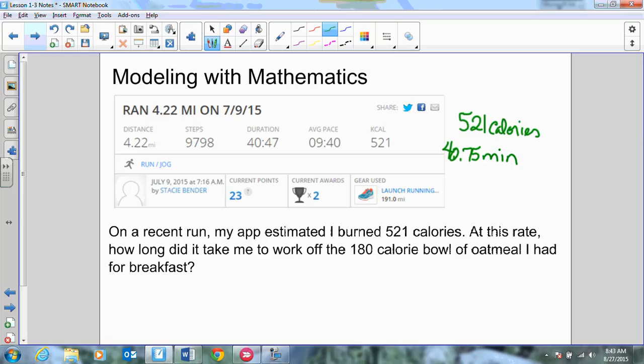Okay. So, I'm going to do that on your calculator for me. 521 divided by 40.75. 12.79. What was it again? I'm sorry. 12.79. 12.79. So, 12, almost 13 calories every minute that I was on that trail.